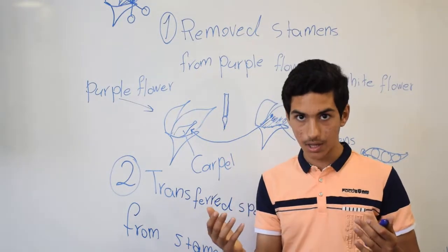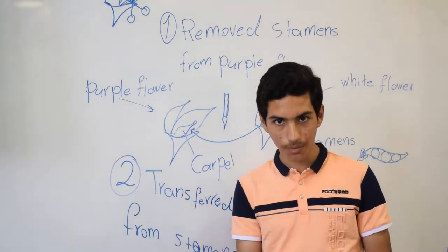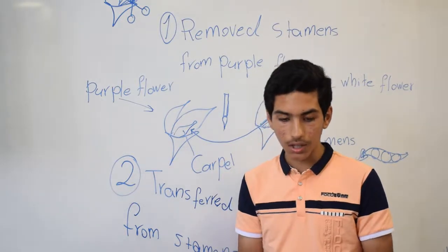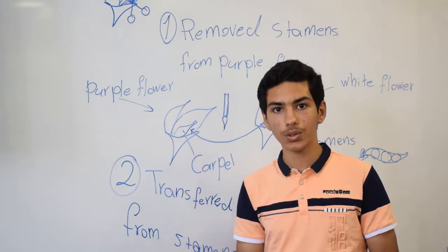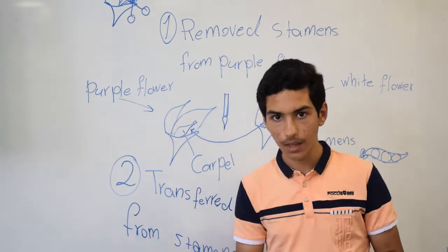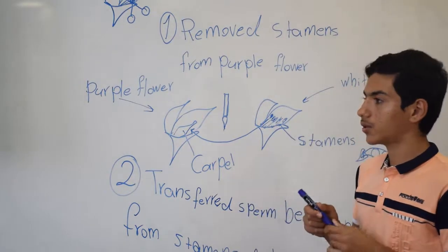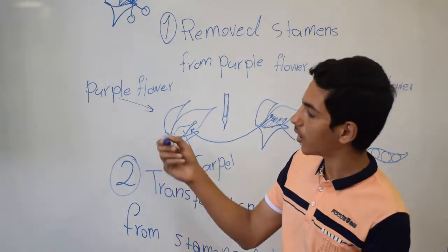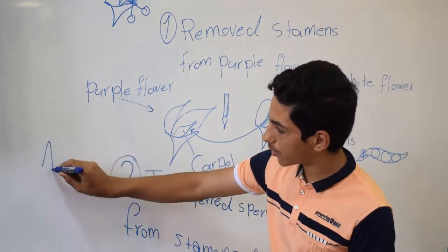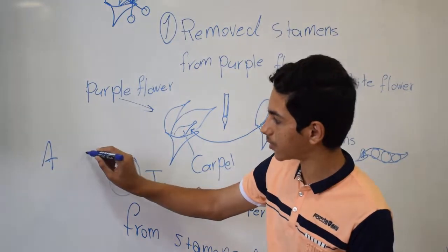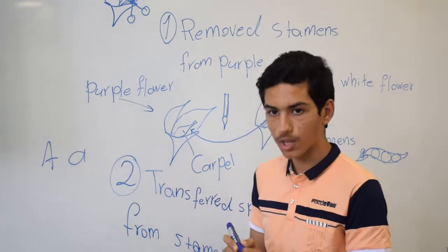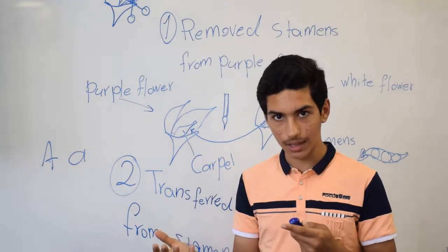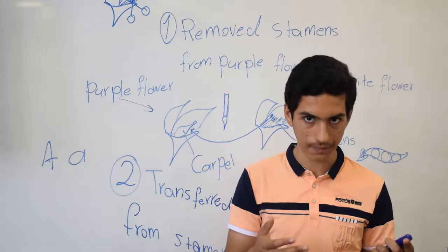We have a genotype and a phenotype. For genotype, we use genetic notation — for example, capital A and small a — noting that capital A is a dominant allele and small a is a recessive allele.